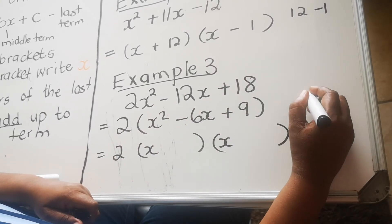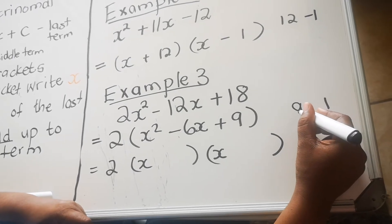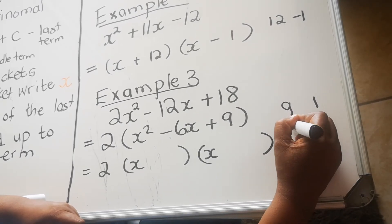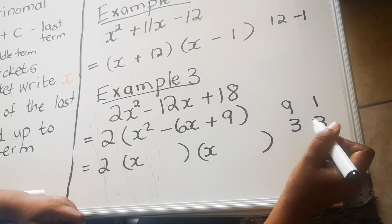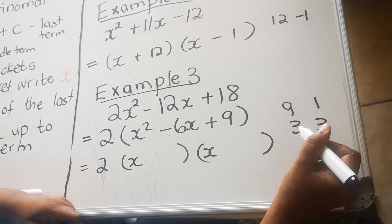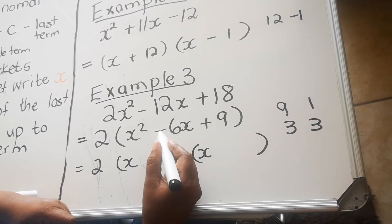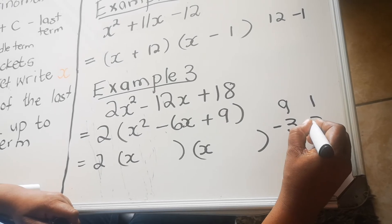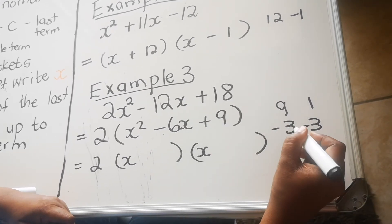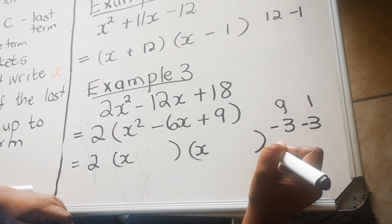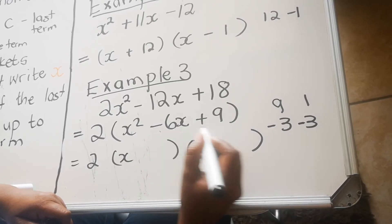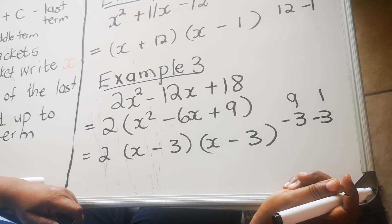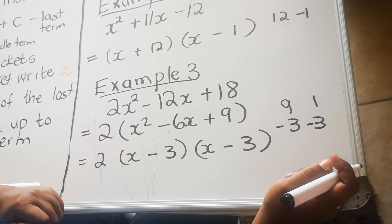Find factors of the last term, 9, that multiply to give 9 and add to give the middle term, −6. First pair: 9 times 1 — adding gives 10, not 6, so that's wrong. Second pair: 3 times 3 — adding gives 6, but we need −6. So both factors must be negative: (−3) times (−3) gives positive 9, and (−3) plus (−3) gives −6. That's correct, so the factors are −3 and −3, giving 2(x − 3)(x − 3).